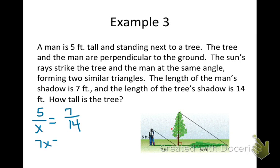So, 7X is equal to, in this case, 70, which is 5 times 14. Divide both sides by 7, and I get X is 10 feet. That would be the height of my tree.